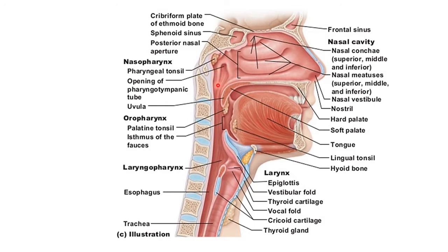Two mucous folds extend downward from the elevation. One is the salpingopharyngeal fold, which contains the salpingopharyngeus muscle, and the other is the salpingopalatine fold, which contains the levator veli palatini muscle. This part is called the nasopharyngeal recess. The pharyngeal recess is a deep depression behind the tubal elevation, also known as the fossa of Rosenmüller.